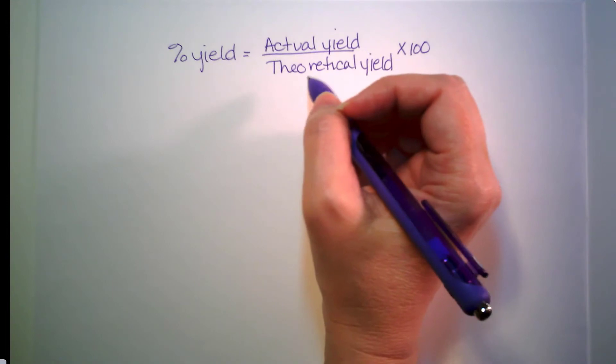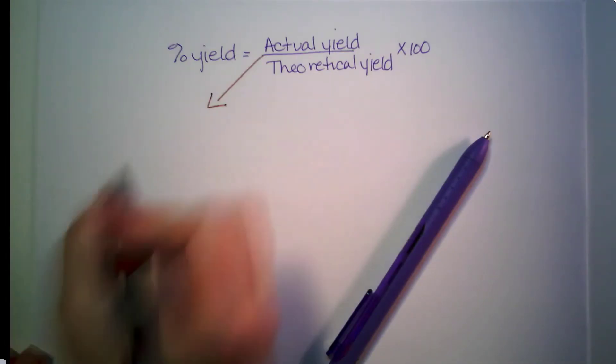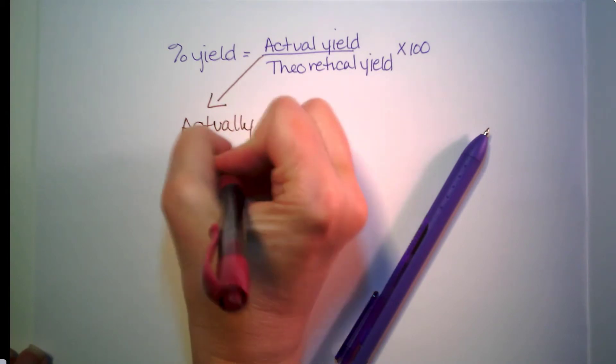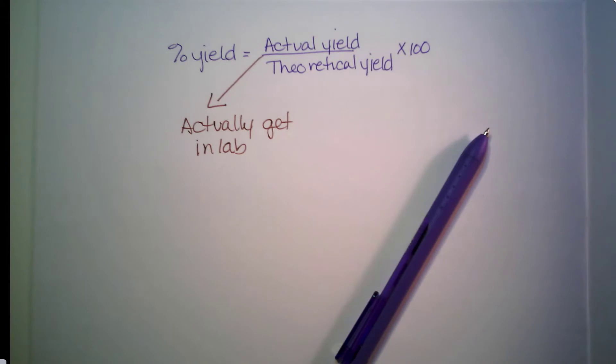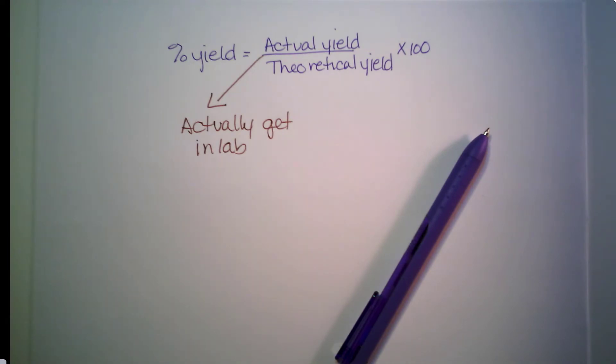The actual yield, this is what you actually get in lab. So if we were doing a lab and we were making those s'mores that we've talked about before and we got the box of graham crackers, that's our limiting reactant, and we should have been able to make 20 s'mores from our box. But let's say somebody got hungry and ate some, we dropped some on the floor, some were broken. We might only be able to make 18 instead of 20.